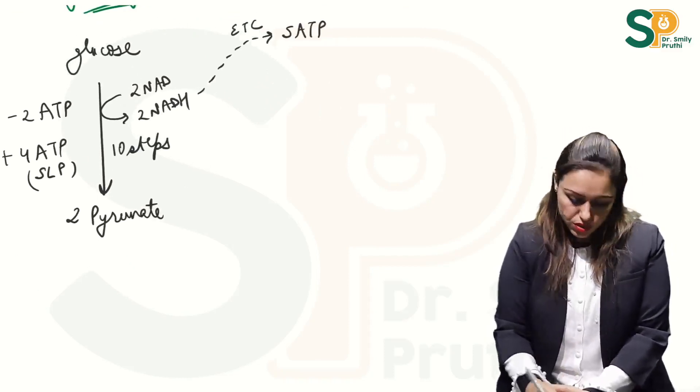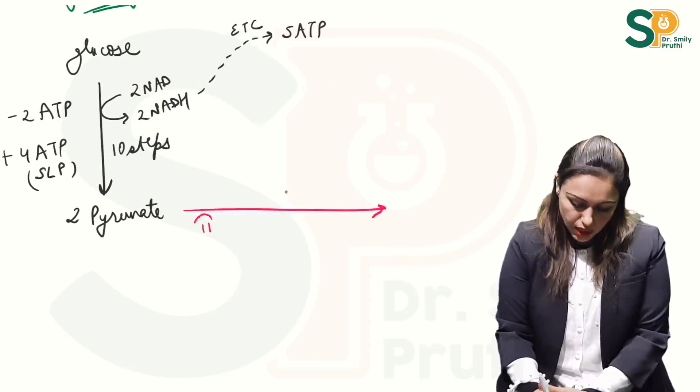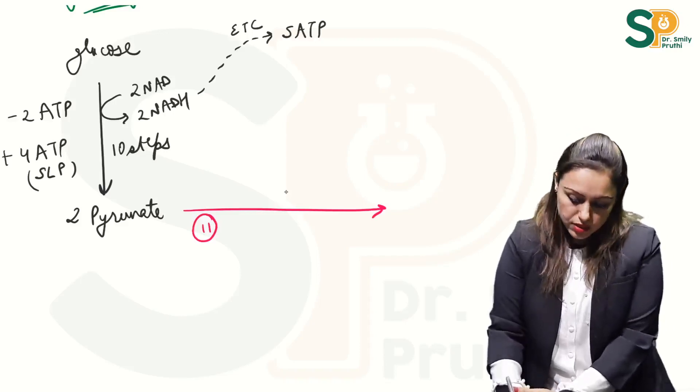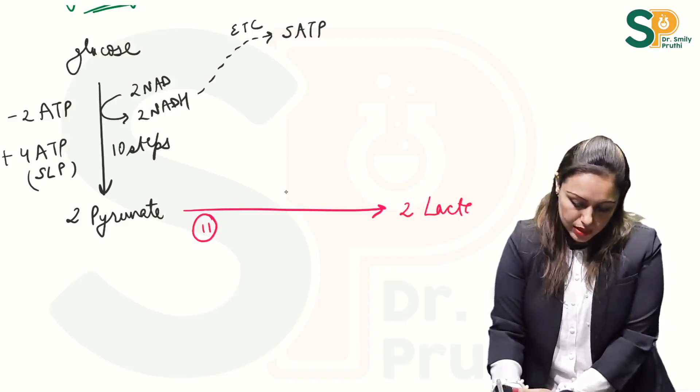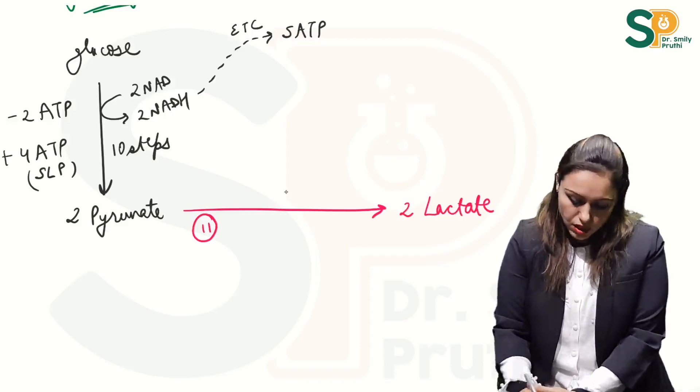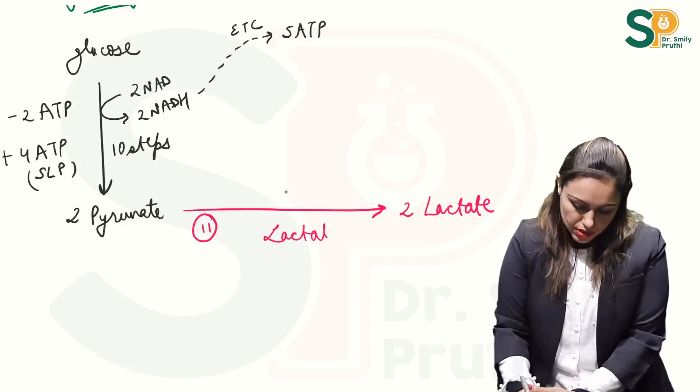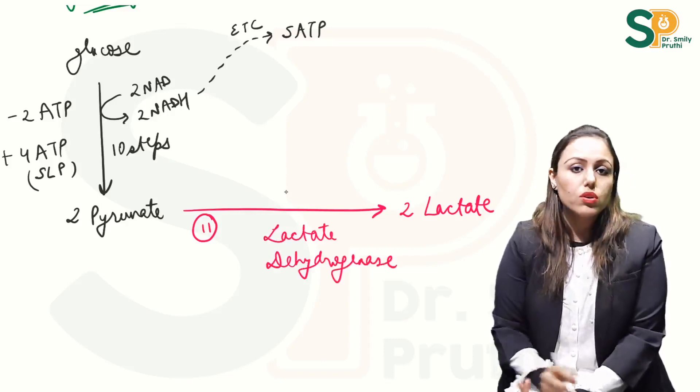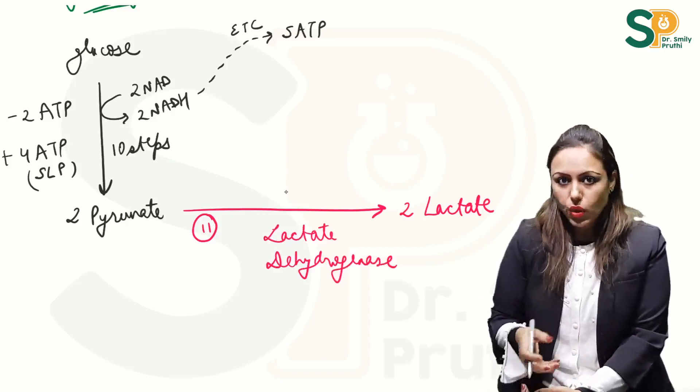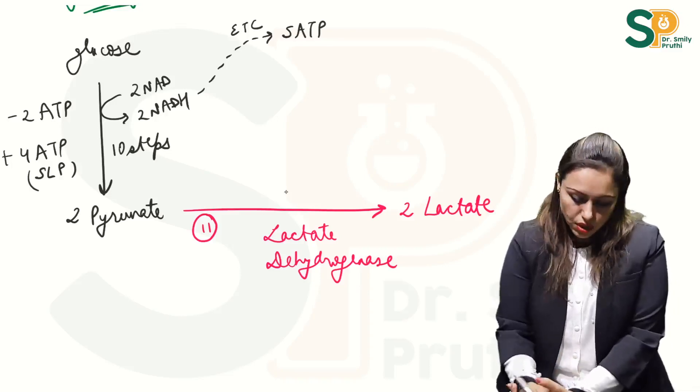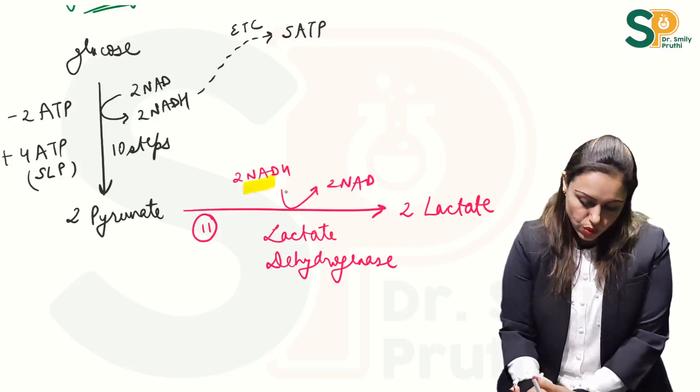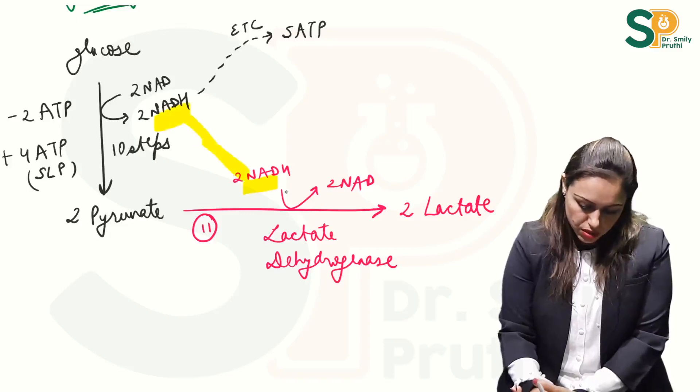Which is 2 pyruvate gets converted to 2 lactate here. And here the enzyme is lactate dehydrogenase which converts NADH to NAD. So as everything is 2 here, so 2 NADH gets converted to 2 NAD.